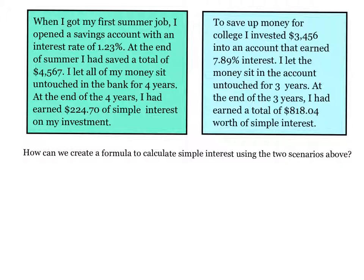Our first situation states that when I got my first summer job, I opened a savings account with an interest rate of 1.23%. At the end of summer, I had saved a total of $4,567. I let all my money sit untouched in the bank for four years. At the end of the four years, I had earned $224.70 of simple interest on my investment.